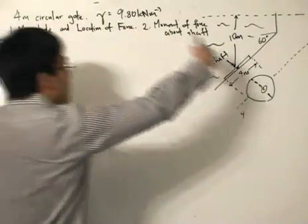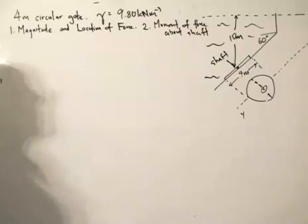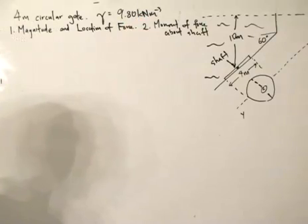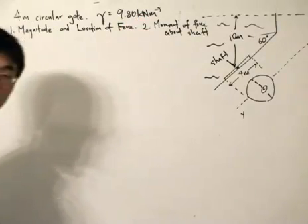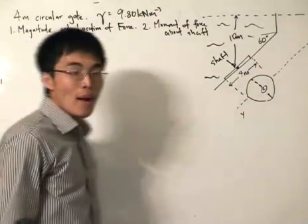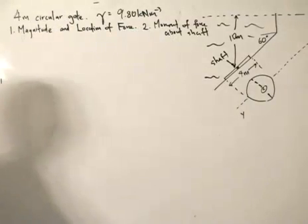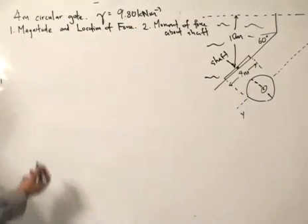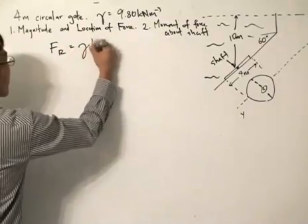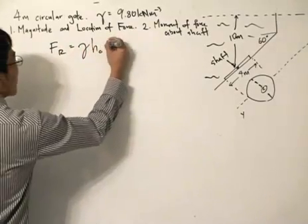The shaft is holding the gate, which is four meters in diameter, and the specific weight of the liquid we're dealing with is 9.80 kilonewtons per meter cubed. The problem asks for the magnitude and the location of the force. What did we say about the magnitude of force? You can simply implement the formula: FR equals the specific weight times hc times area.